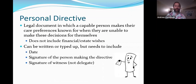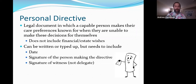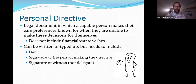A personal directive is a legal document which a capable person uses to make their care preferences known when they're not able to make decisions for themselves. It doesn't include financial or estate wishes — those are in a power of attorney and a will respectively. A personal directive includes medical and personal care preferences. You can write or type it up, but it has to include a date, your signature, and a witness signature. The witness can't be the delegate you named or that delegate's spouse, but can be anybody else — they're just attesting that you are who you say you are.